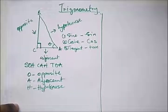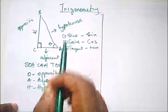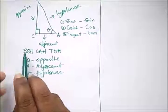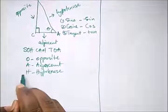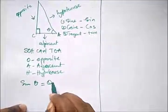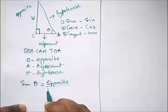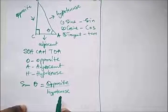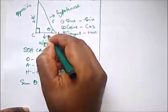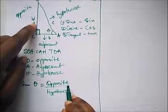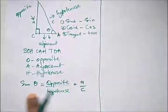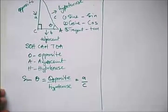To find sine theta, we use SOH: sine theta equals opposite over hypotenuse. So if we label the triangle with sides A, B, and C, our opposite side is A and our hypotenuse is C. Therefore, sine theta equals A over C.